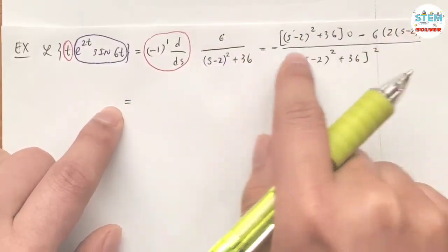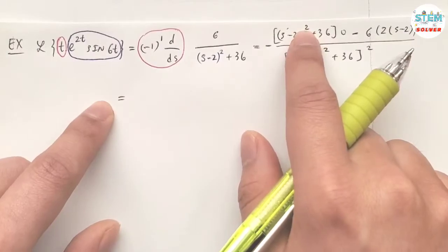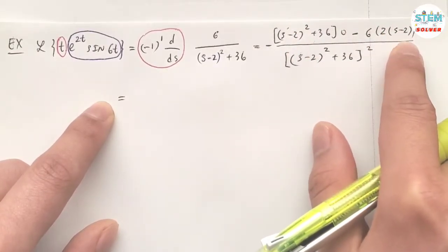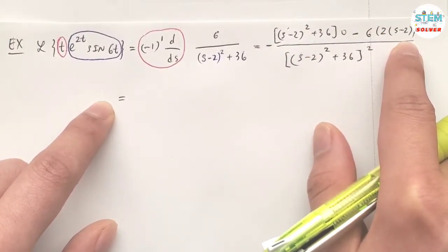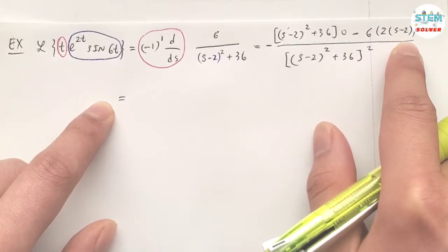Okay, now simplify this, so I have s minus 2 squared, and over here I also have s minus 2, so I'm going to factor it out.